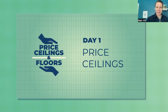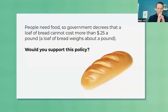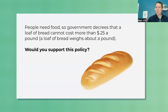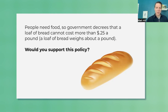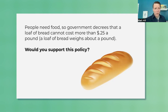So this is day one: price ceilings. Our bell ringer is a simple question — we give students a price ceiling, although you don't necessarily have to call it that yet. Just say, look, people need bread, or people need food to live. So let's say we make that food super cheap — 25 cents, a quarter for a pound, about a loaf of bread. And hey, would you support this policy? Some well-intentioned students may say yeah, that'd be great, get some cheap food to people. Some other people may say no, for a variety of reasons. You just want to start to talk it through, maybe do a show of hands of who wants to support it.